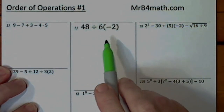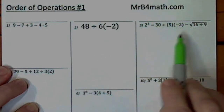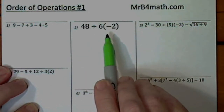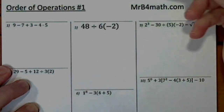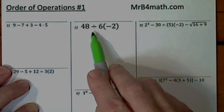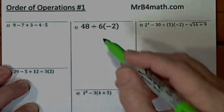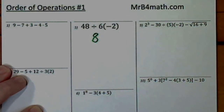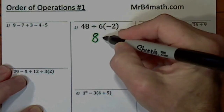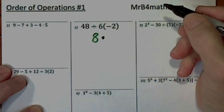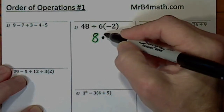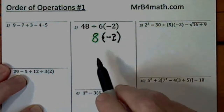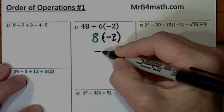Moving to the next problem — some of these are quite long and involved, but on a test it's not uncommon to see a very short one where it's easy to do things in the wrong order. Often people think you have to do multiplication first, but no — it's multiplication or division, whichever you get to first going left to right. 48 divided by 6 is 8. Bring down whatever you haven't used — this 6 was waiting to multiply, so the multiplication is preserved. 8 times negative 2 is negative 16.